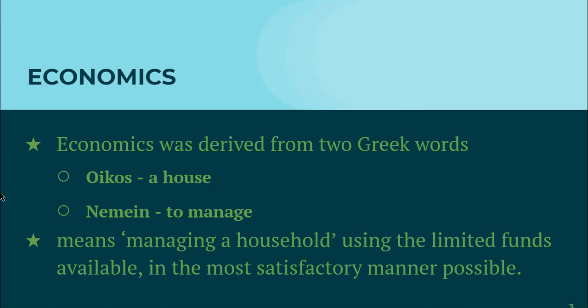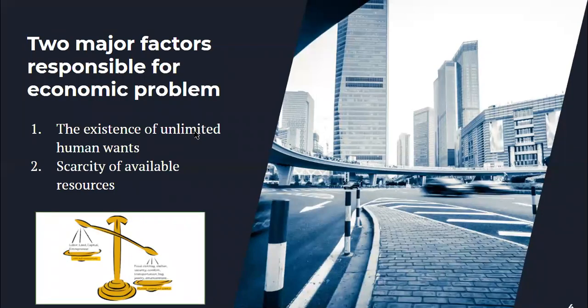Economics was derived from 'oikos' and 'nemin,' which literally means managing a household using limited funds in the most satisfactory manner — making sure that the entire family is satisfied. Now, economic problems — everybody has economic problems, and they are worldwide. The two basic factors responsible are the existence of unlimited human wants and the scarcity of available resources. We have unlimited wants and we have fewer resources.